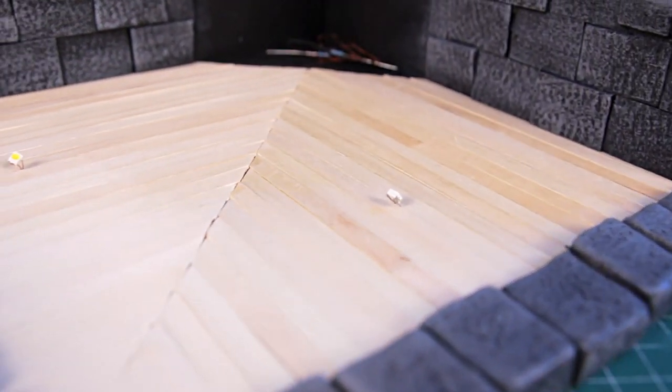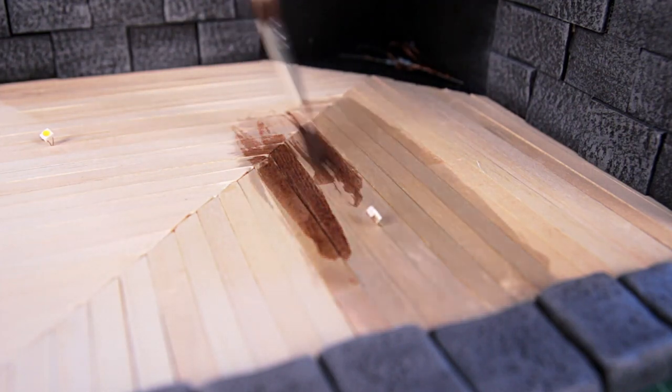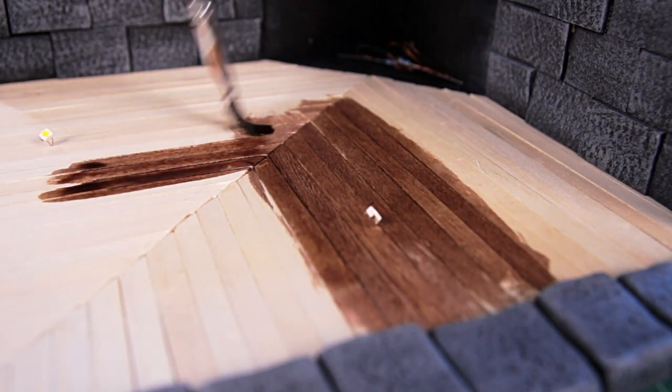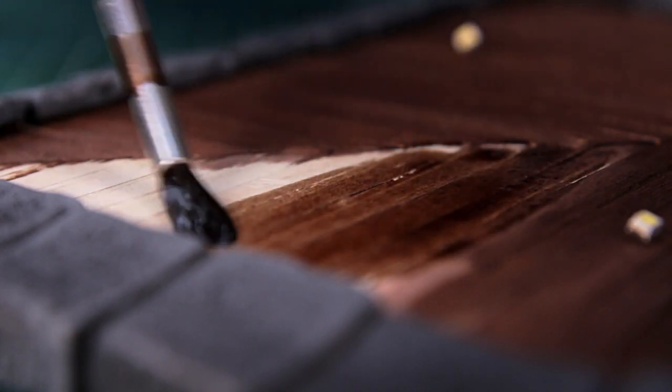The glue is already firmly holding the floor and I applied a water-based wood stain to the boards. I applied several coats to make the color richer. You can cover with varnish, but I like it without.